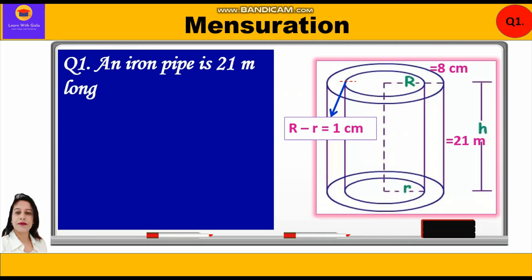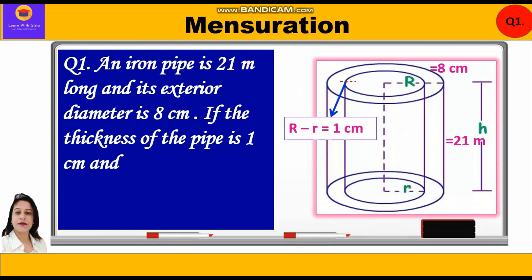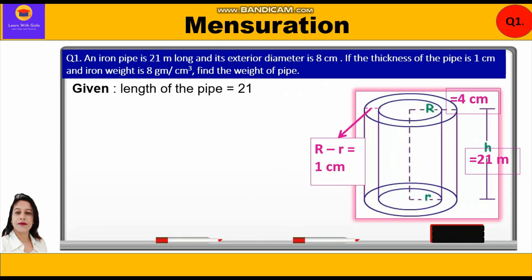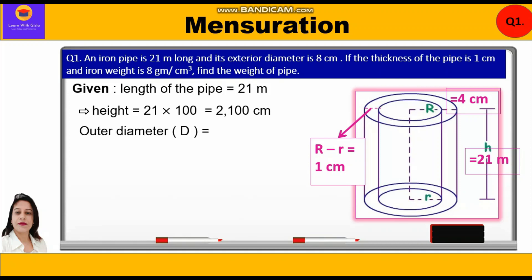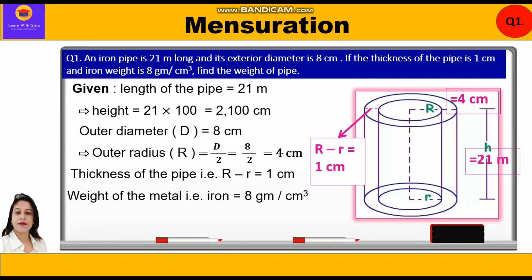Question number one: An iron pipe is 21 meters long and its exterior diameter is 8 centimeters. If the thickness of the pipe is 1 centimeter and iron weight is 8 grams per centimeter cube, find the weight of the pipe. Given: length of pipe is 21 meters, converting to centimeters gives 2100 cm. Outer diameter D = 8 cm, so outer radius R = 4 cm. Thickness = outer radius minus inner radius = 1 cm. Weight of iron = 8 grams per cm³.